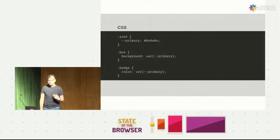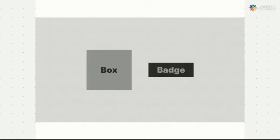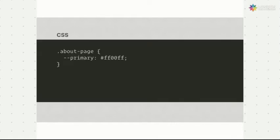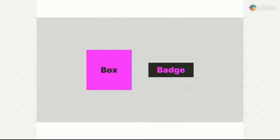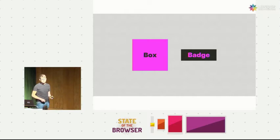Another thing that gives us great power in CSS is CSS custom properties — native CSS variables. They're incredibly handy for tokenizing our CSS. In this example I'm setting a primary colour, and I've got a box and a badge setting the background and colour respectively. And because they're affected by the cascade too, we can override them contextually. So I've got an about page class where I want to make them hot pink — obviously. This is the only colour slide you're going to see for the entire presentation.